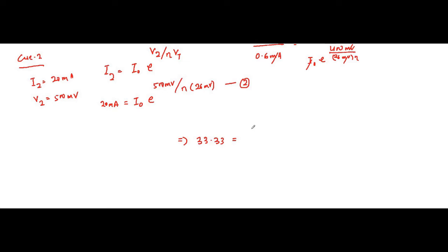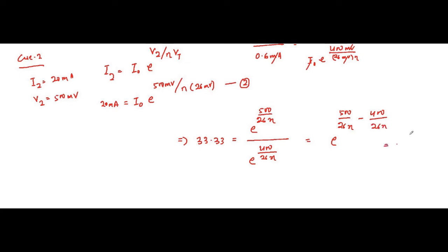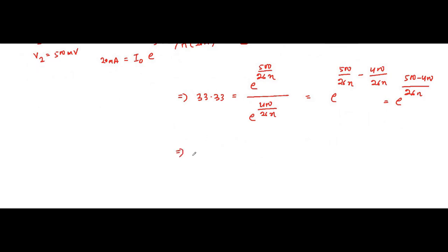Simplifying: 20 / 0.6 = 33.33 = e^(500/26η) / e^(400/26η) = e^((500−400)/26η), which gives 33.33 = e^(100 / 26η).